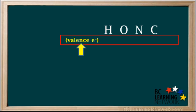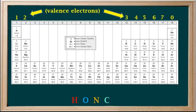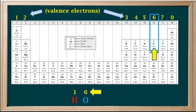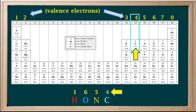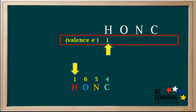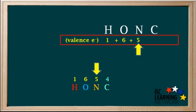The first thing we need to do is find the total number of valence electrons in the molecule. We can use the position on the periodic table to find the number of valence electrons in each atom. Hydrogen in group 1 has one valence electron, oxygen in group 16 has 6, nitrogen in group 15 has 5, and carbon in group 14 has 4.